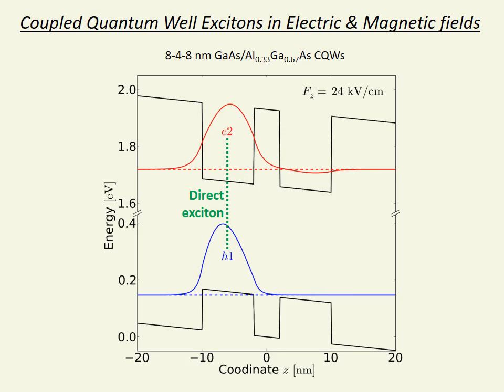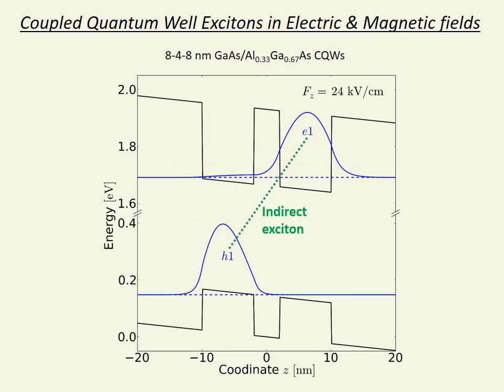When the Coulomb interaction is introduced, one can find direct exciton states composed of an electron and a hole in the same quantum well. There are also indirect exciton states formed from an electron and a hole in adjacent quantum wells. These are the ground state of the system in the presence of the perpendicular electric field.